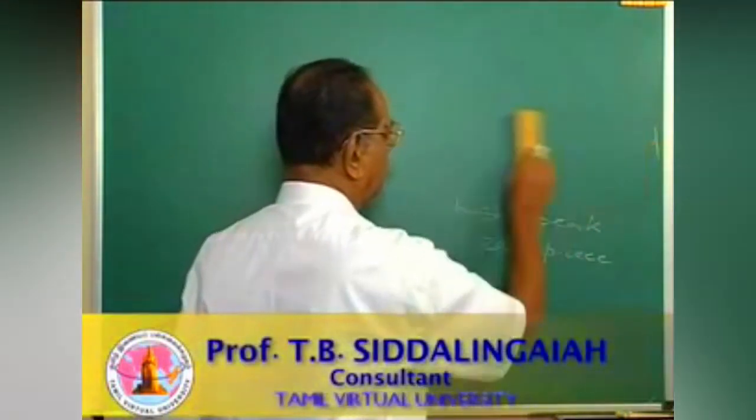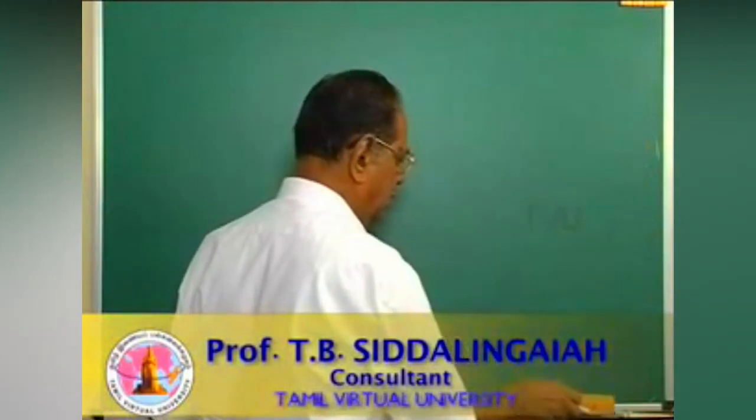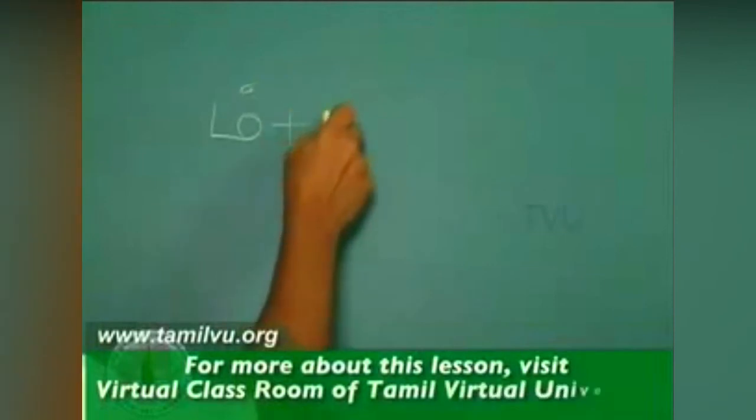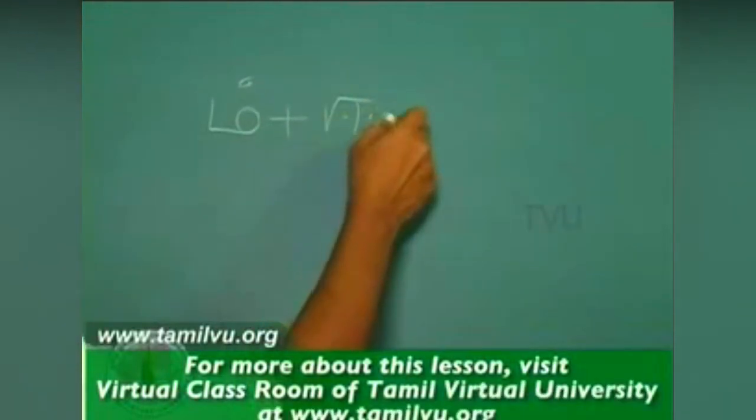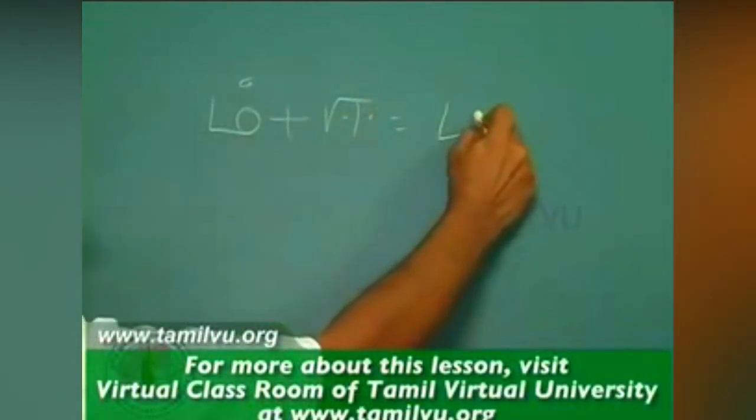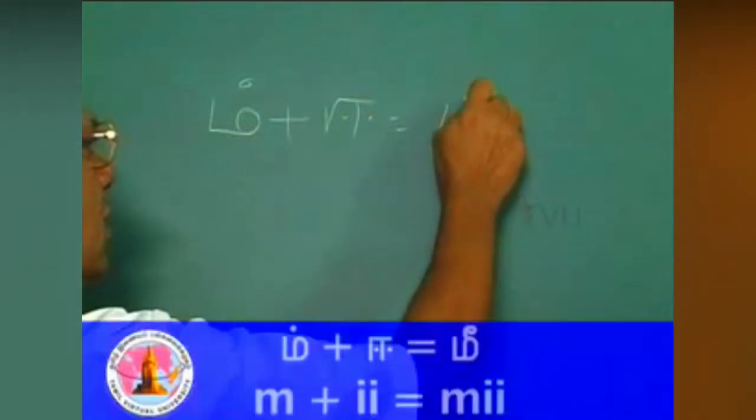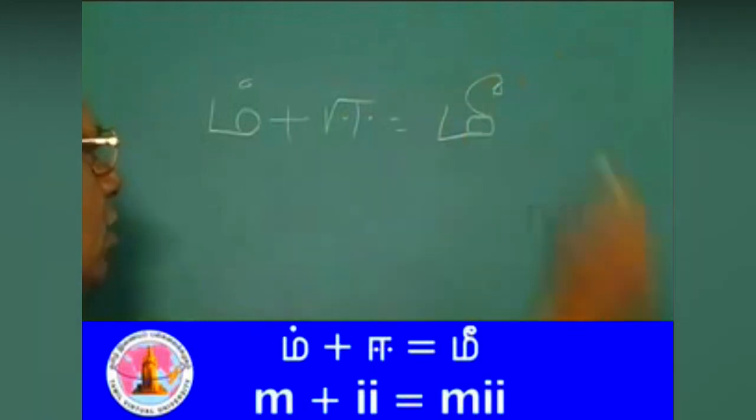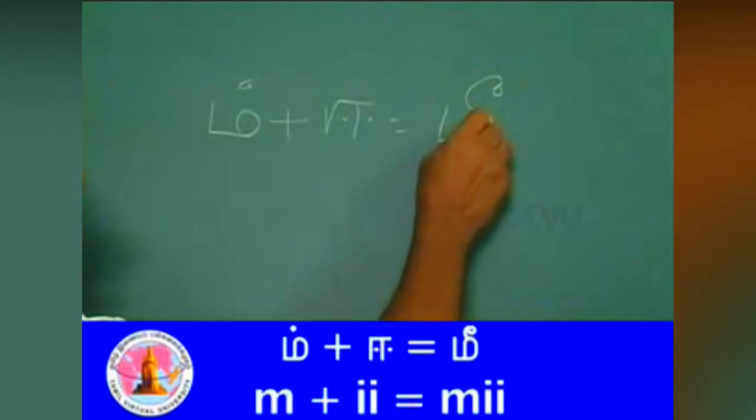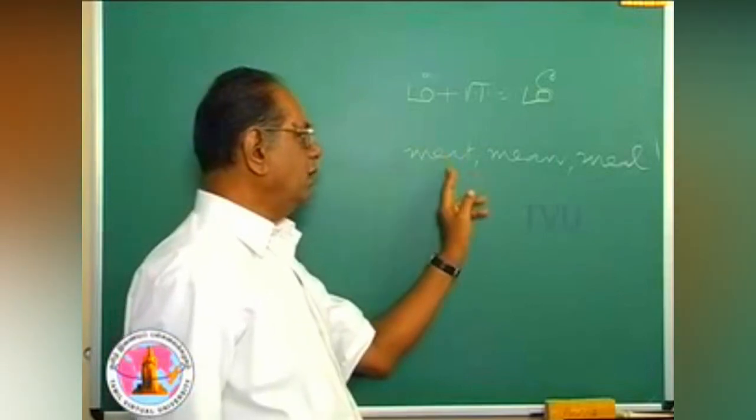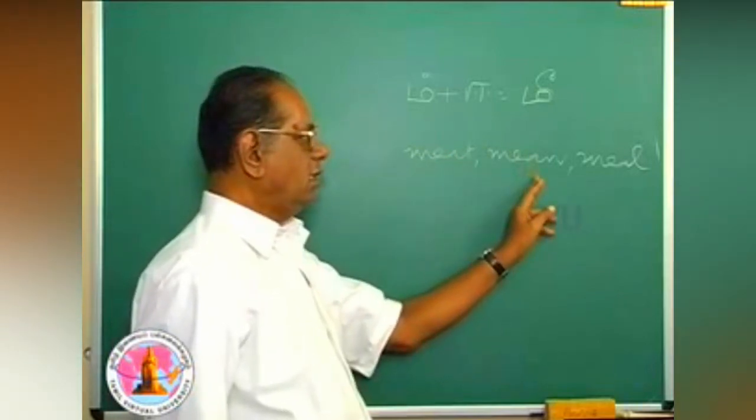Next, you have a nasal, that is hmm, plus ee. This is ma, and the marker is done on the above. The marker is a hook, which is rounded off in the middle. This is me, as you have in meet, mean, and mean.